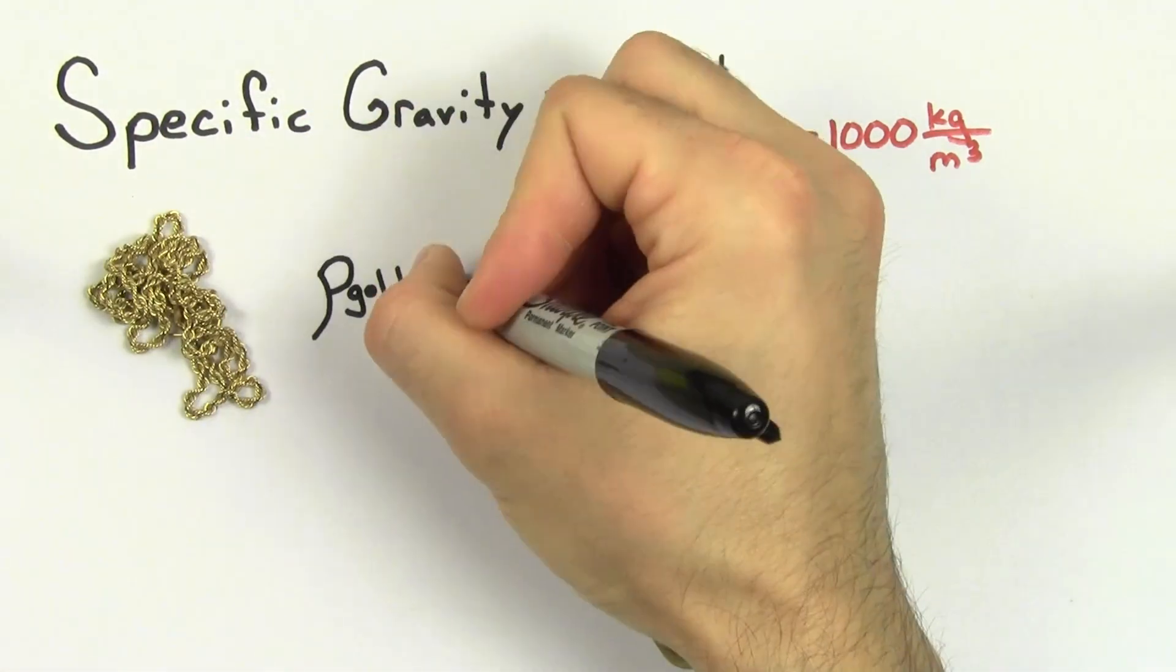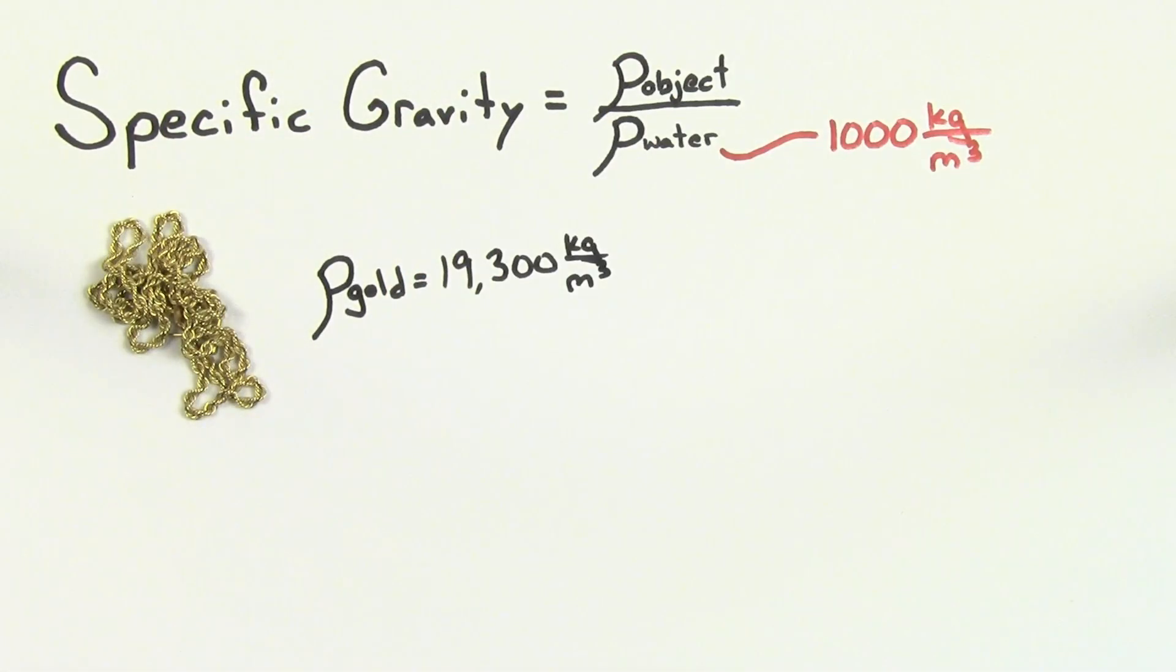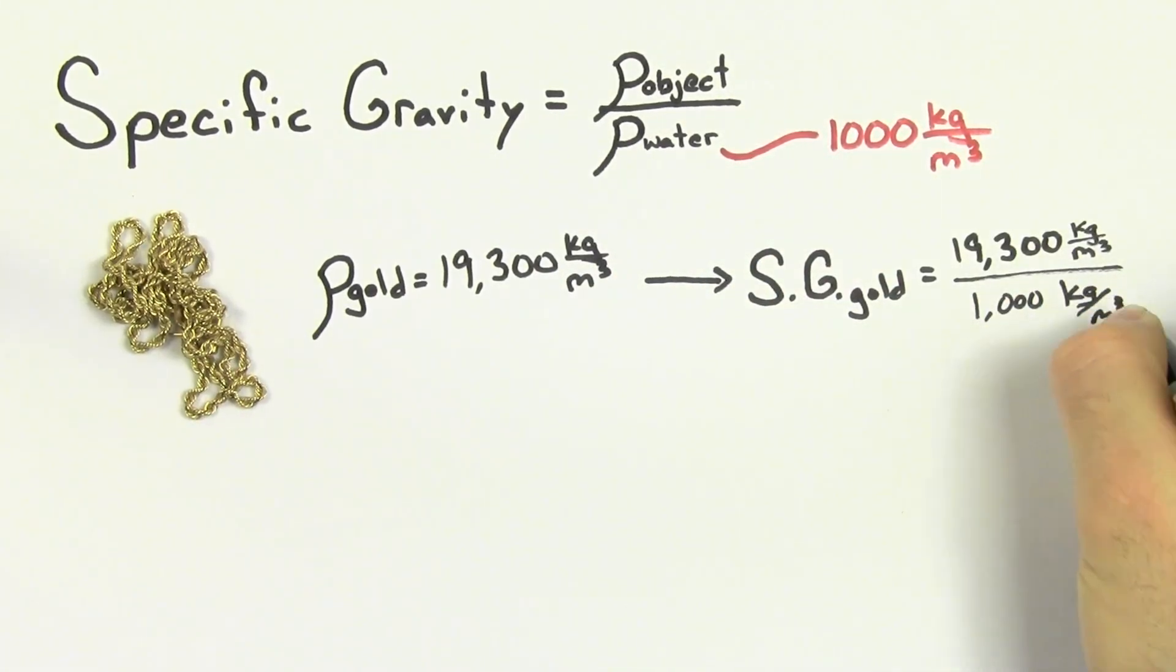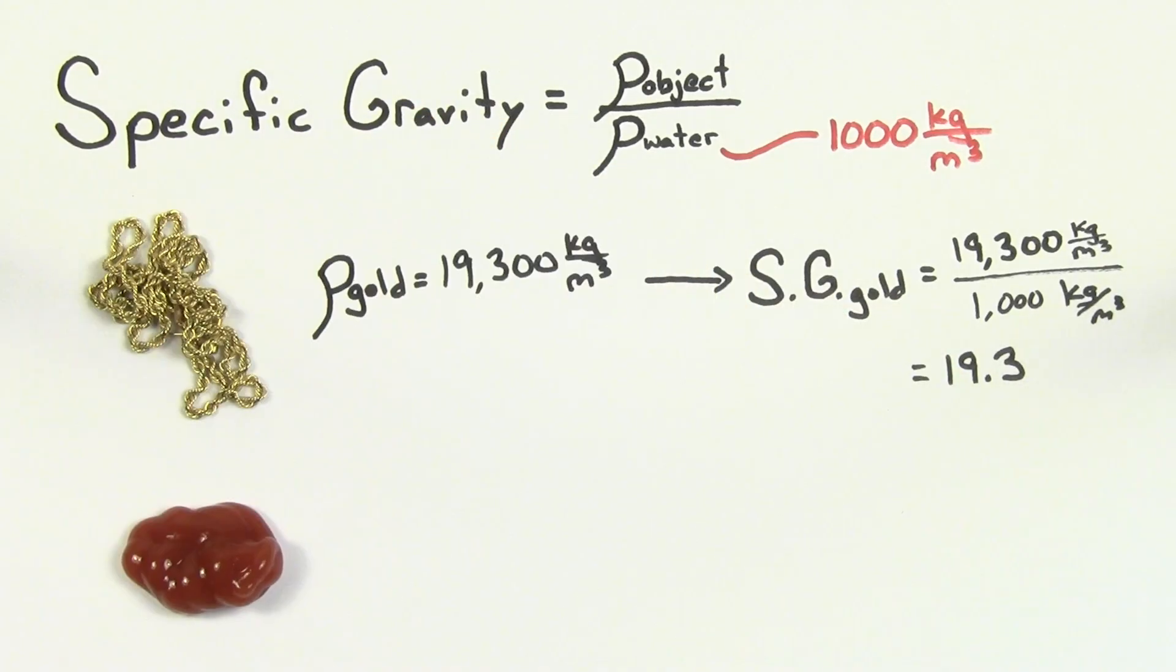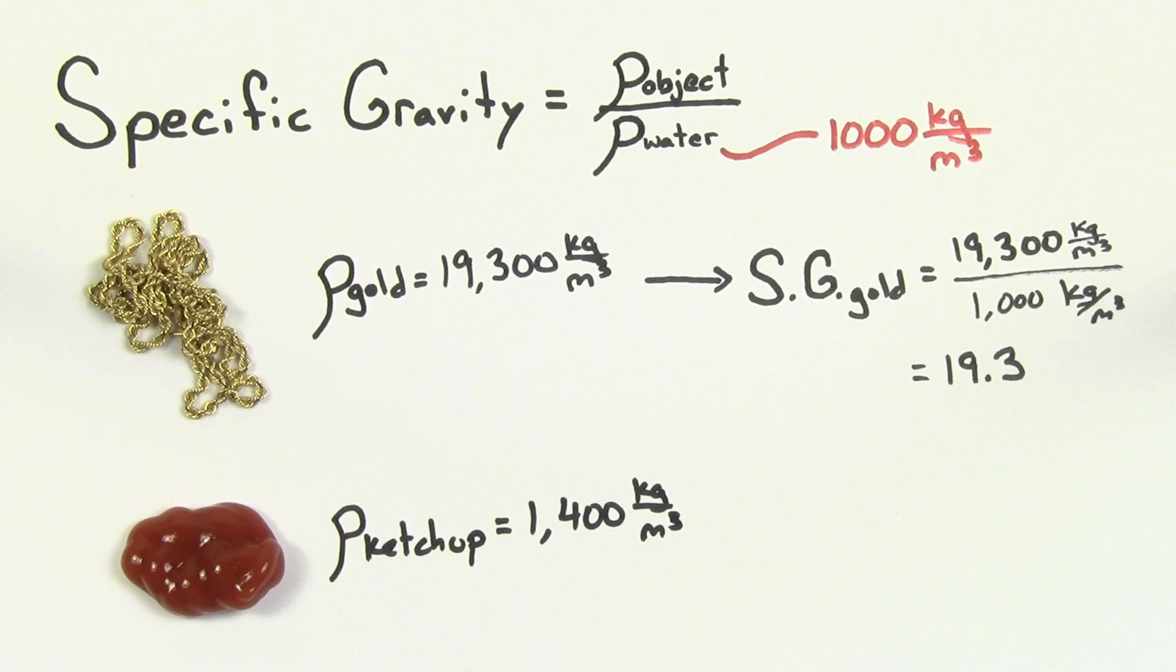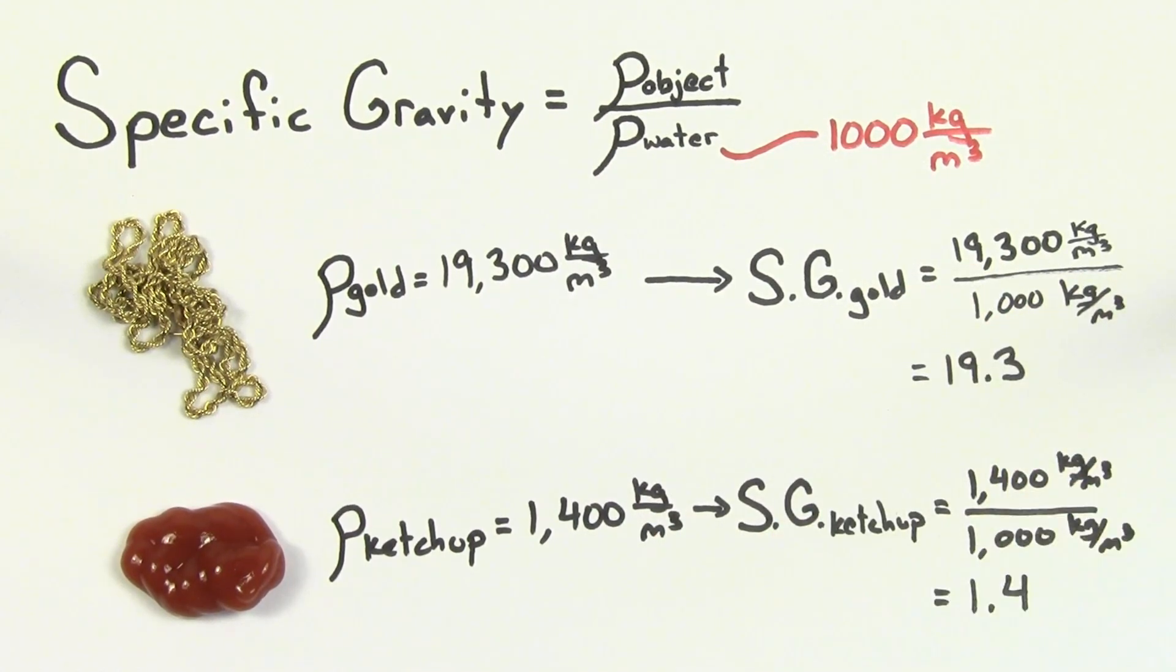For instance, the density of gold is 19,300 kilograms per meter cubed, so the specific gravity of gold is 19.3. The density of ketchup is 1400 kilograms per meter cubed, so the specific gravity of ketchup is 1.4.